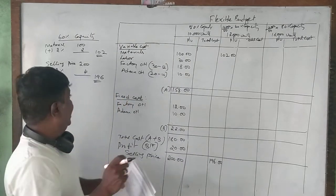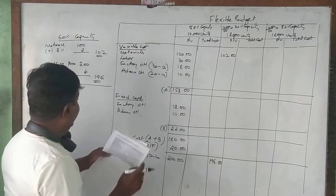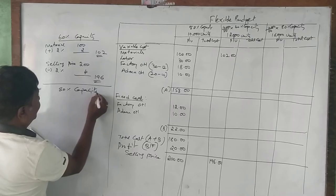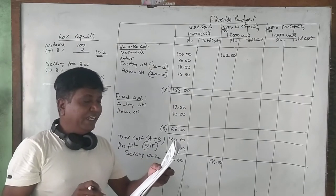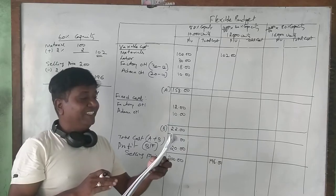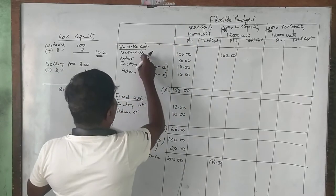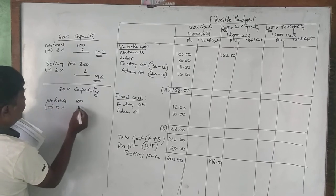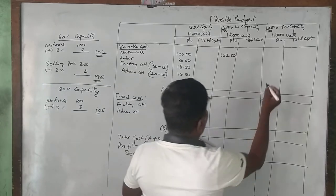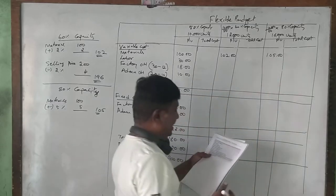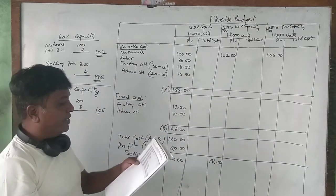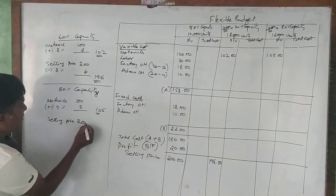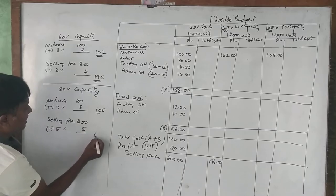At 80% capacity, material cost per unit increases by 5%. On the basis of 50% capacity, one unit of material is 100 rupees. So 5% of 100 = 5 rupees increase, material becomes 105 rupees. The selling price per unit falls by 5% — selling price is 200 rupees, 5% = 10 rupees reduction, so selling price at 80% capacity is 190 rupees per unit.